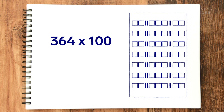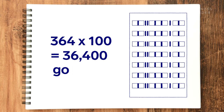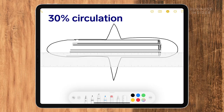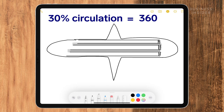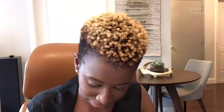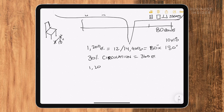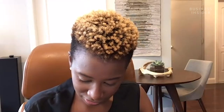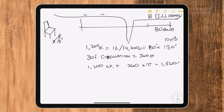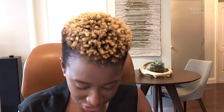So 364 times 100 golf balls per gap is 36,400. Like a typical New York City building, you need about 30% for circulation. What's 30% of 1,200 feet? That's 360 square feet. So 1,200 square feet plus 360 gives us 1,560 square feet — seats and circulation combined.